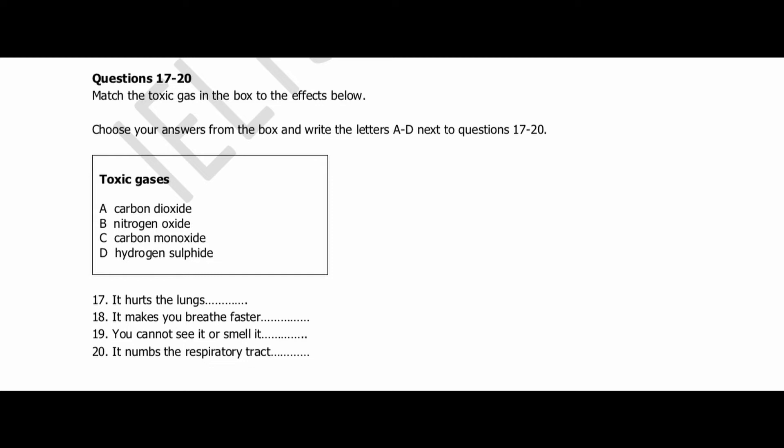Hydrogen sulfide, on the other hand, affects the nervous system, causing dizziness and pain in the respiratory system. It does occur naturally in volcanic gases and hot springs, and it also results from the bacterial breakdown of organic matter. You're probably familiar with it. You know, it has that characteristic odor of rotten eggs. But make no mistake, in large concentrations, it's deadly. Lastly, nitrogen oxide is another extremely poisonous gas at high levels of concentration, which deadens feeling in the throat and lungs, causes swelling in the throat, and a build-up of fluids in the lungs. That is the end of Section 2. You now have half a minute to check your answers.